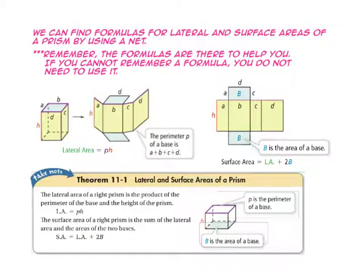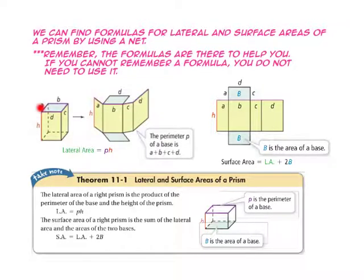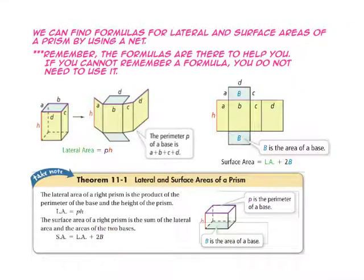We can find formulas for the lateral and surface areas of a prism by using a net. Remember, the formulas are there to help you — if you cannot remember a formula, you really don't need to use it. The lateral area of a right prism is the product of the perimeter of the base and the height of the prism: lateral area equals perimeter times height. The surface area of a right prism is the sum of the lateral area and the area of the two bases: surface area equals lateral area plus two times the area of the base.